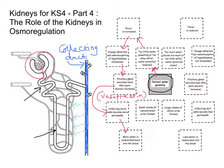If we reabsorb more water back into the blood, then what we ultimately get is a very small volume of concentrated urine being formed. That's what happens when we're trying to conserve water — when the water level is a bit lower, the kidneys will try and save as much as they can so we're not losing it in the urine.